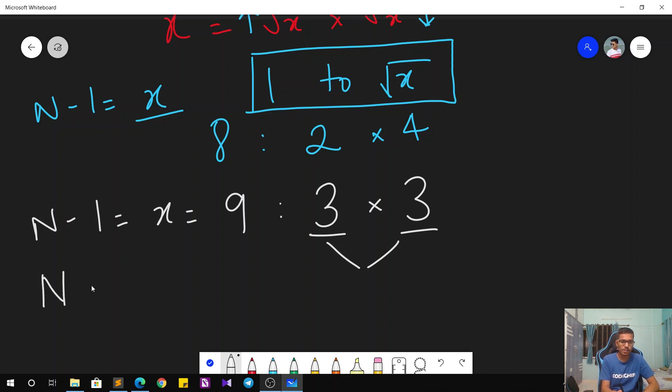So with that logic, what's the final solution? We get the number N from the question. From that we compute N minus 1. Let's call that X. Then we check all the numbers from 1 to square root of X—whether they're divisors of X. At the same time, we'll check if X divided by that number is a divisor, and we'll keep on incrementing our answer.